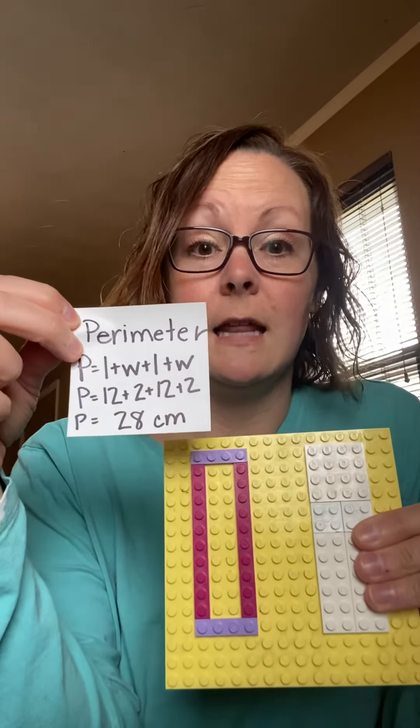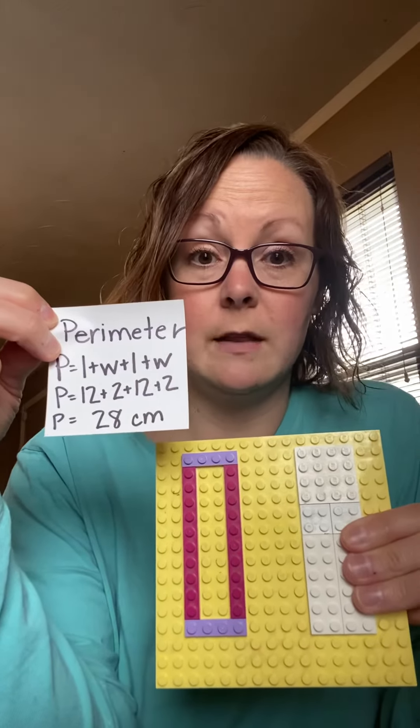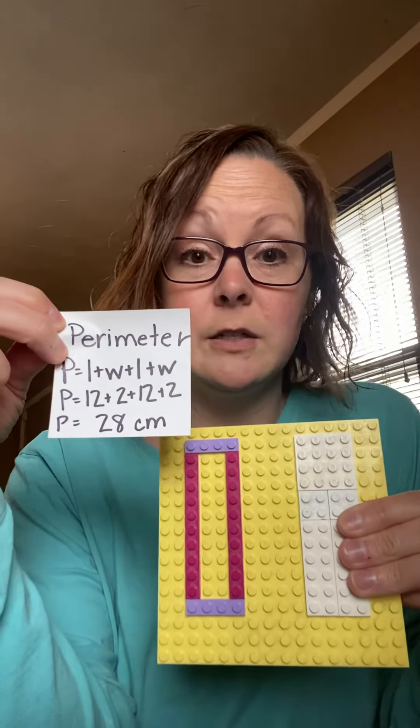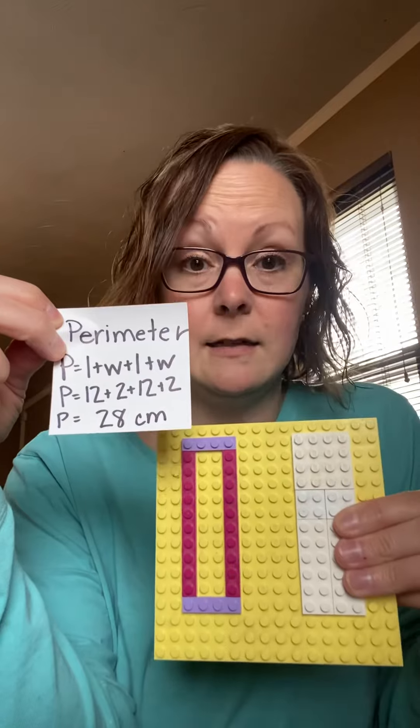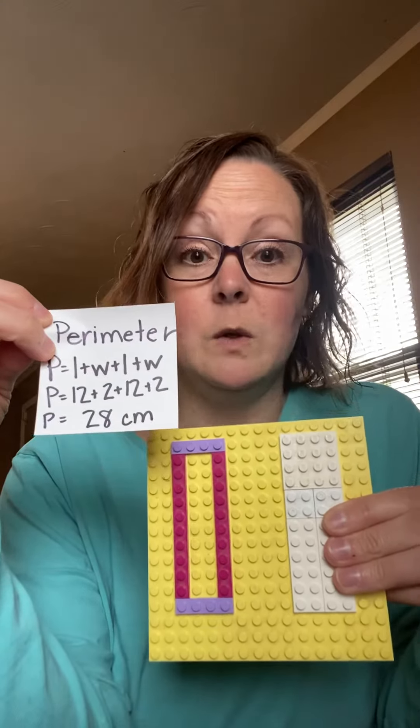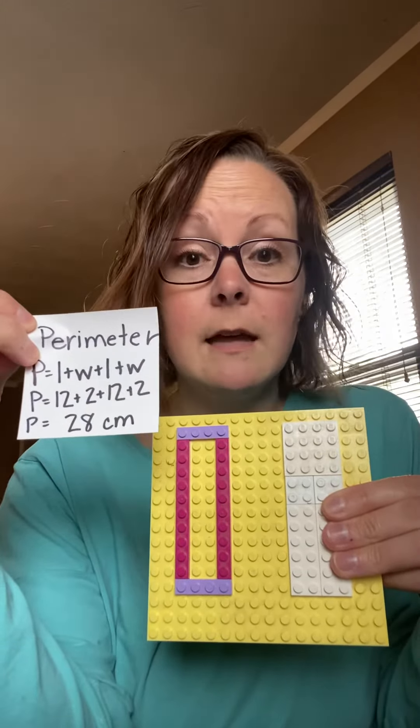If I am taking the perimeter of something and I'm acting like each of the little pegs is a centimeter, I'm going to count how many around my shape is. So here's how I'm going to find it: perimeter is length plus width plus length plus width. That means I'm finding all four sides of it. In this particular instance, that's taking 12 plus 2 plus 12 plus 2, and that's going to give me 28 centimeters. You can find the perimeter of any shape — it doesn't have to be a rectangle — but you would add up all sides of it.